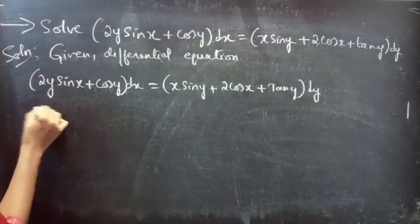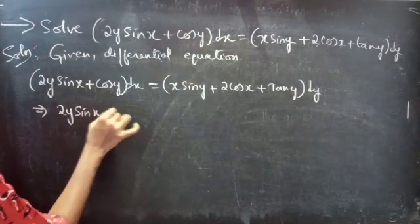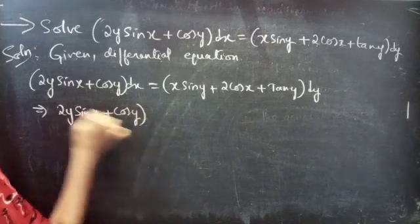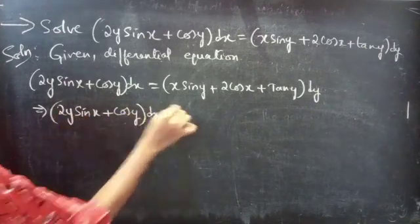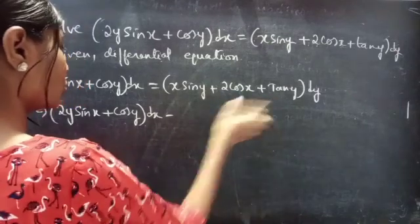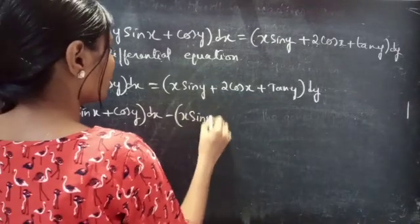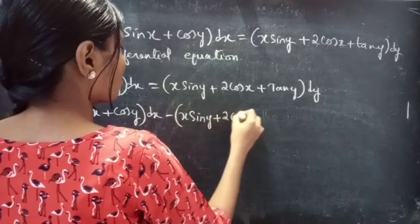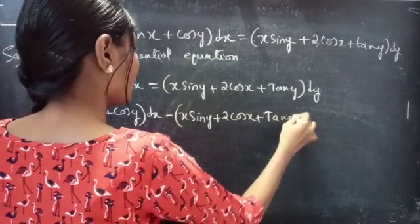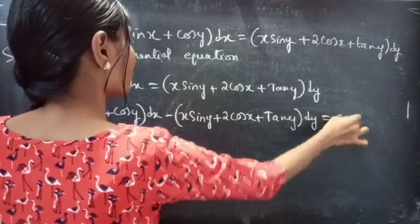You can rewrite it as: (2y sin x + cos y) dx minus (x sin y + 2 cos x + tan y) dy equals zero, by taking the right-hand side to the left-hand side.